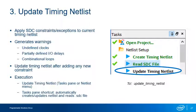Next, you'll update the timing netlist. This tells the Timing Analyzer to take the constraints you've entered and apply them to the current timing netlist. While updating, the tool may generate warnings, for example if you have clocks or I/O that have not been completely constrained, or if the design contains combinatorial feedback loops. You can perform this step in the console pane, the task pane, or by selecting the command from the Netlist menu.